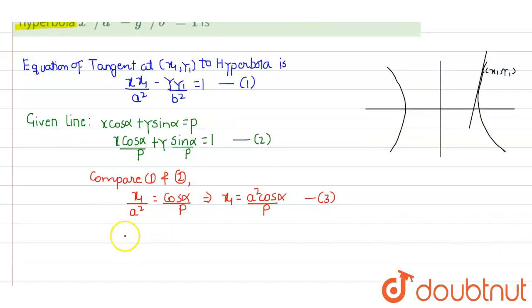Similarly, compare y coefficients. So what will be the coefficient of y? You will get -y₁/b² equal to sin α/p. So from here y₁ we will get as -b² sin α/p. Let's call it as equation 4.